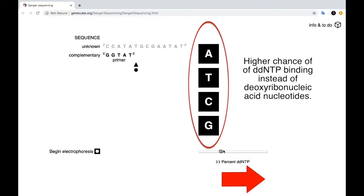Remember, the higher the percentage of DDNTP, the higher the chance that DDNTPs will bind as opposed to the normal deoxyribonucleotides. And this means that replication stops and fragments of DNA of various lengths are formed.